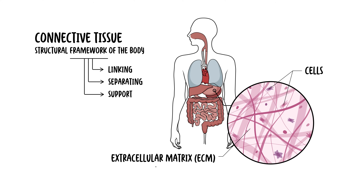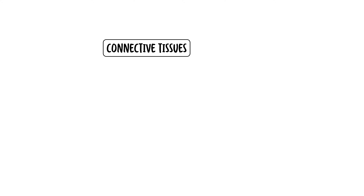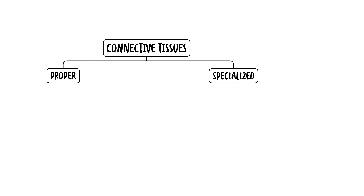The extracellular matrix consists of a fluid compartment that surrounds the cells. There are primarily two types of connective tissue, and each place will categorize these differently, but briefly speaking, the two are connective tissue proper and specialized connective tissue.